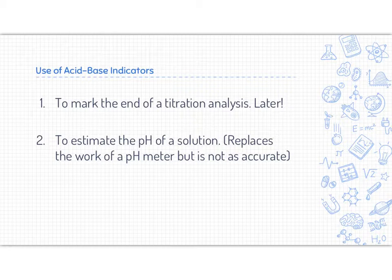So we use acid-based indicators in a couple of different places. We'll use them in titrations, which is next unit, or a few topics later, and to estimate the pH of a solution. So we can use this to replace a pH meter. It's not as accurate, but it can give us a range and a good idea of what that solution is.